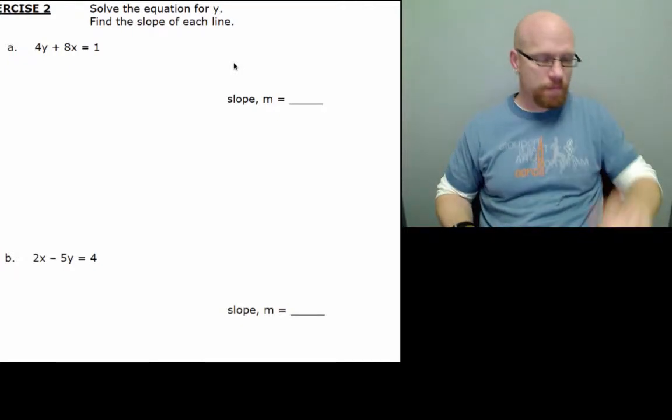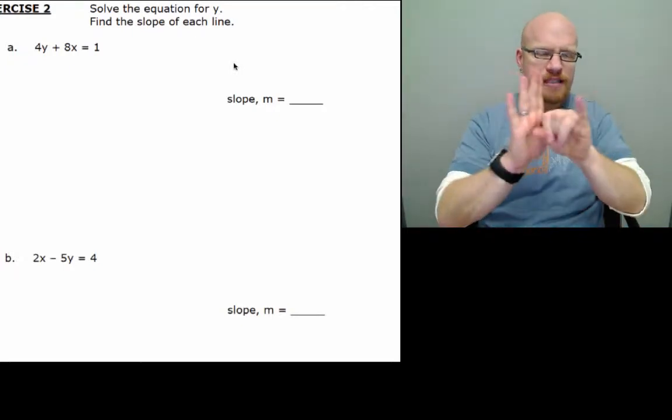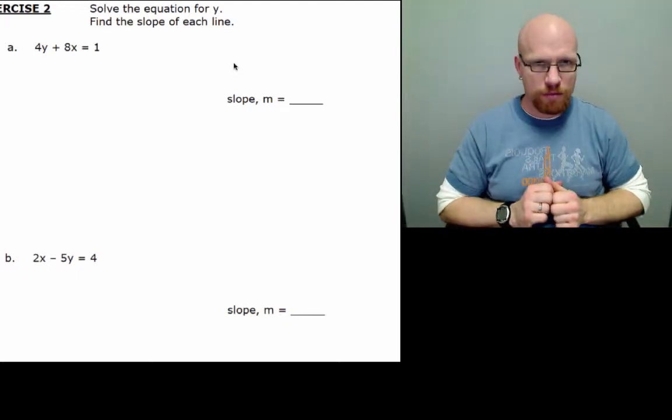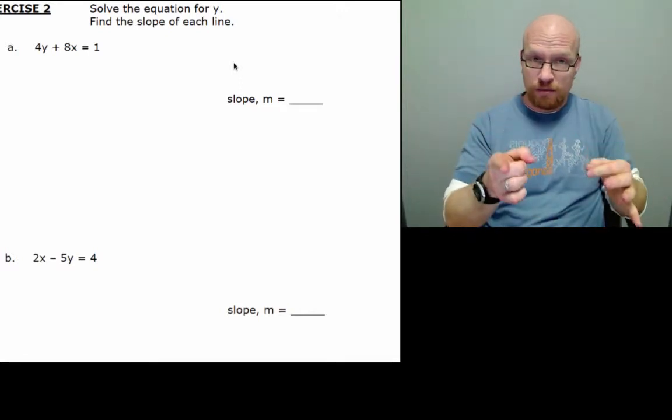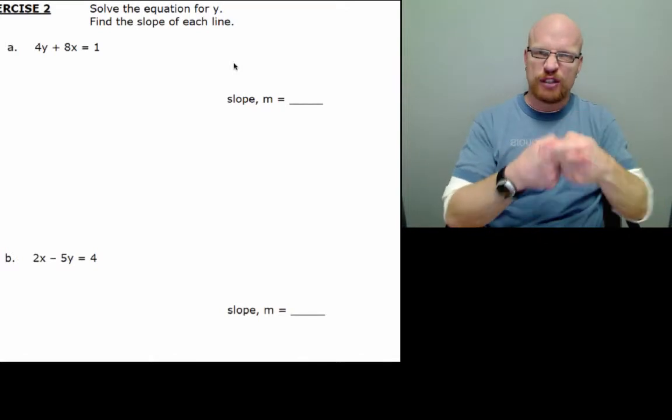So we have to first isolate y for each example, and from that new form of an equation we can find our slope. And I'm going to add the y-intercept too.